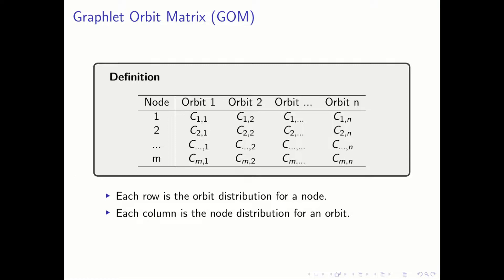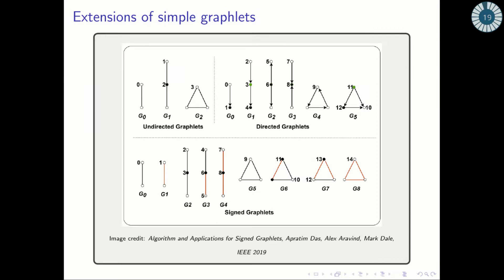You can think of each row as a distribution of orbits for a node, and each column as a distribution of nodes for an orbit. This matrix is the starting point for many types of analysis.